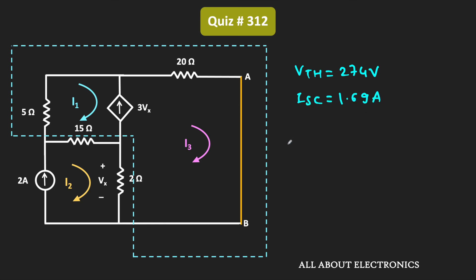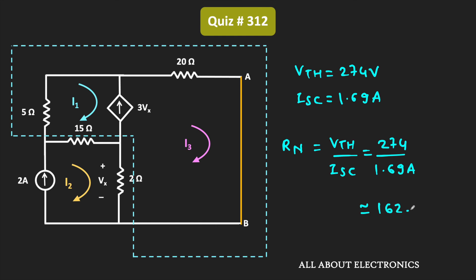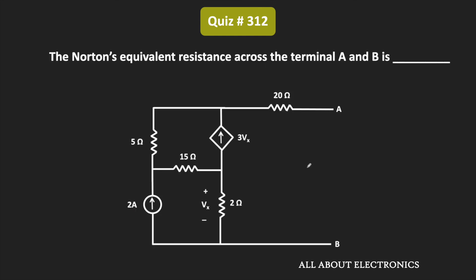The Norton's equivalent resistance across terminals A and B equals Vth divided by Isc, that is 274V divided by 1.69A, which is roughly equal to 162 Ohm. So the Norton's equivalent resistance seen across terminals A and B is equal to 162 Ohm.